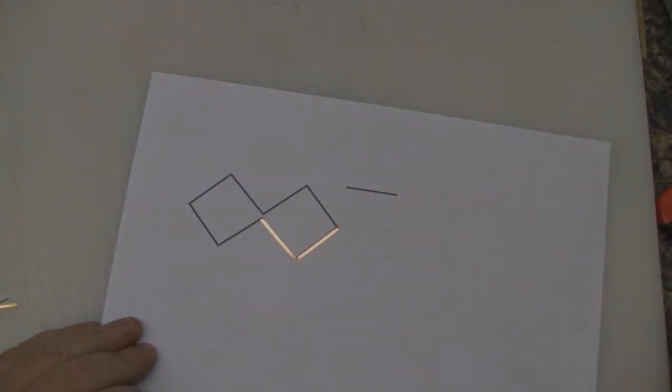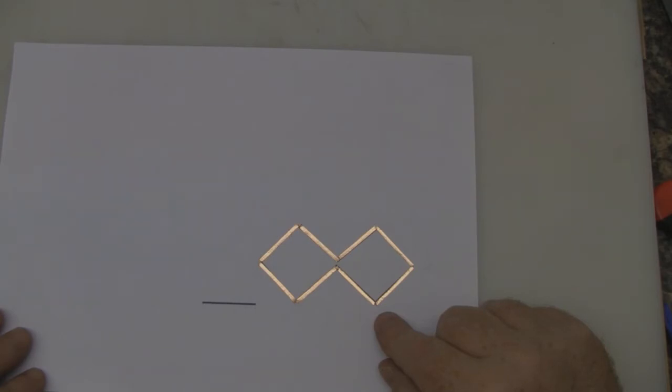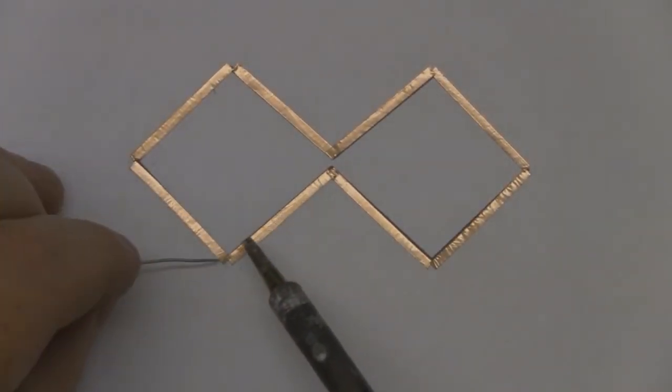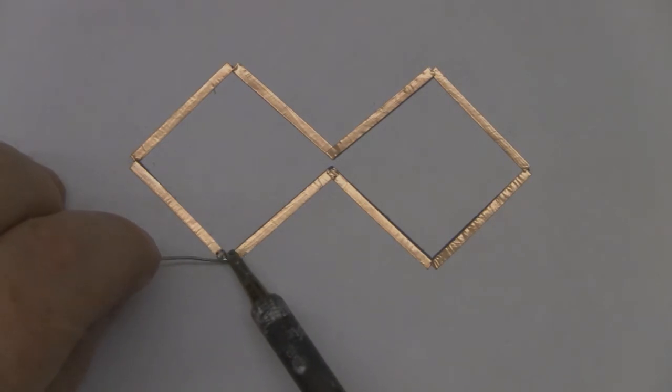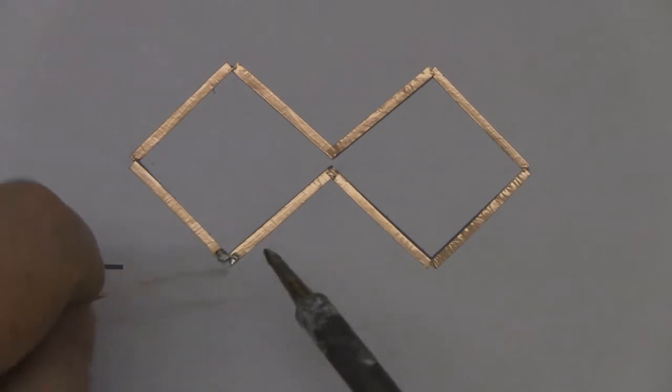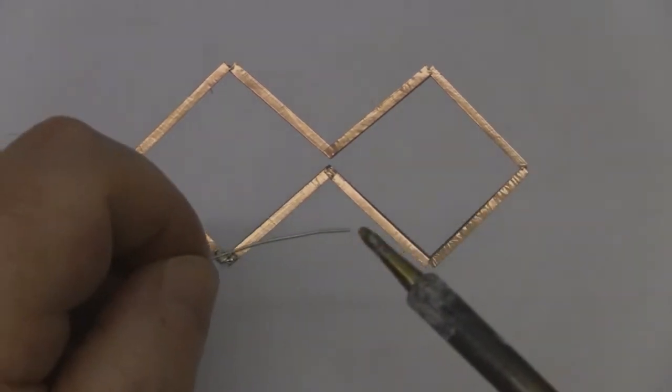Keep going all the way around the biquad until you've got them all covered with copper tape. Once you've got all the copper tape on, you've got these little triangle shapes where the elements don't quite meet up. We're going to put some tin on those gaps to make sure we've got a nice contact between each element. Just apply some solder and flow it over the top.